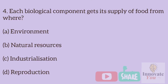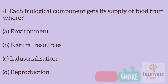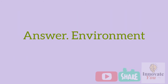Question 4: Each biological component gets its supply of food from where? A. Environment. B. Natural resources. C. Industrialization. D. Reproduction. Answer: Environment.